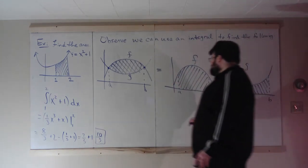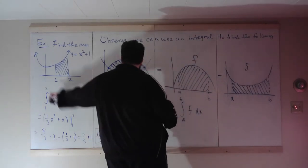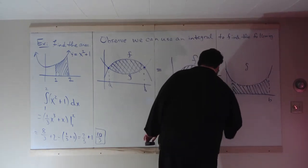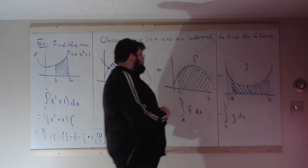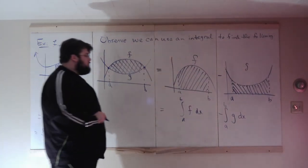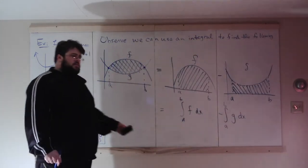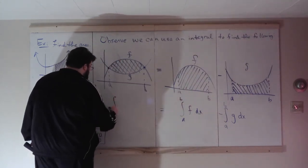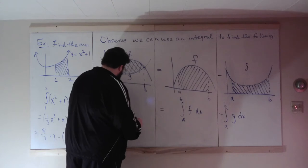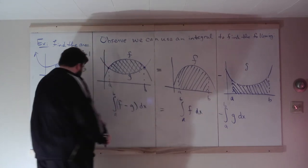How do we do these two integrals? This integral is the integral of F from A to B. This integral is given by the integral of G with respect to X from A to B. If we want this area, all we have to do is compute this integral and subtract this integral. Notice the variables and bounds are all the same, so we can combine them as one integral, F minus G with respect to X on A to B.